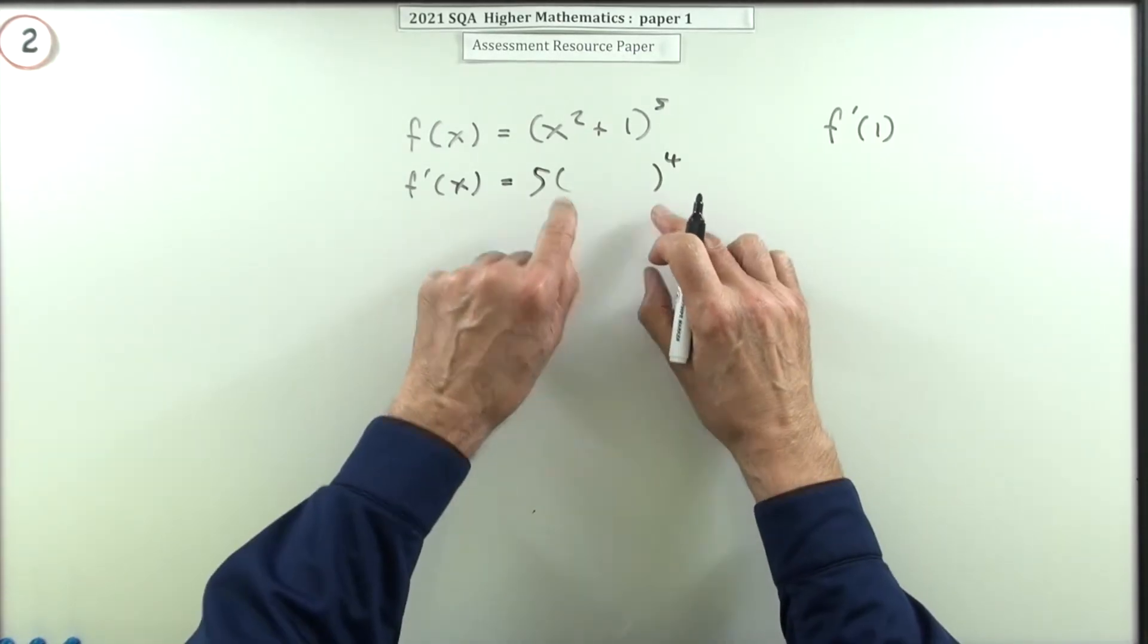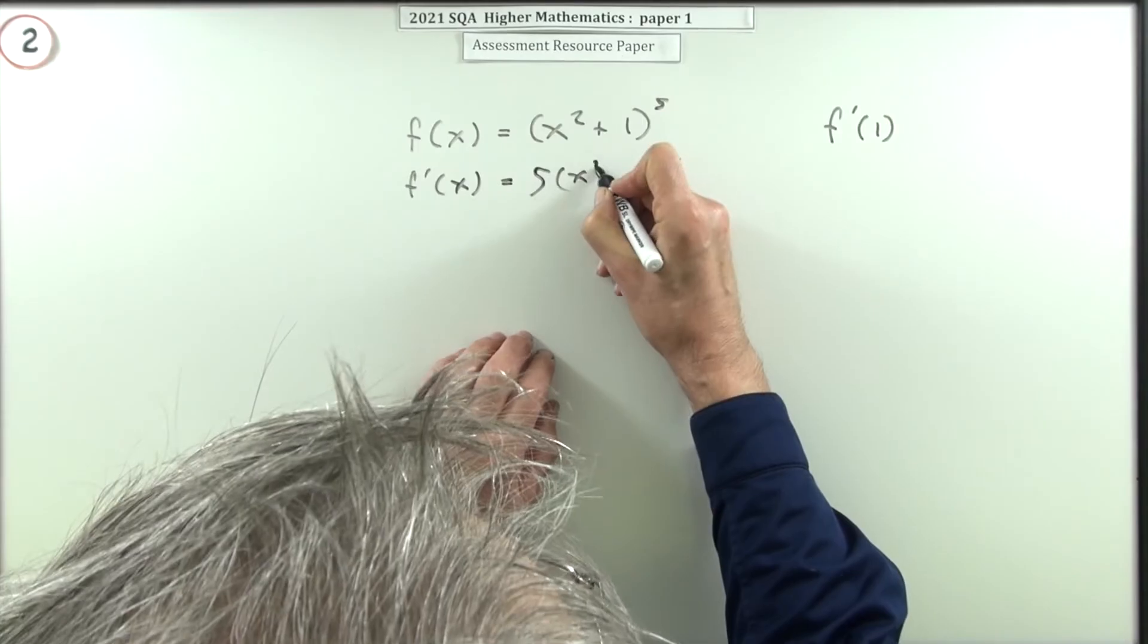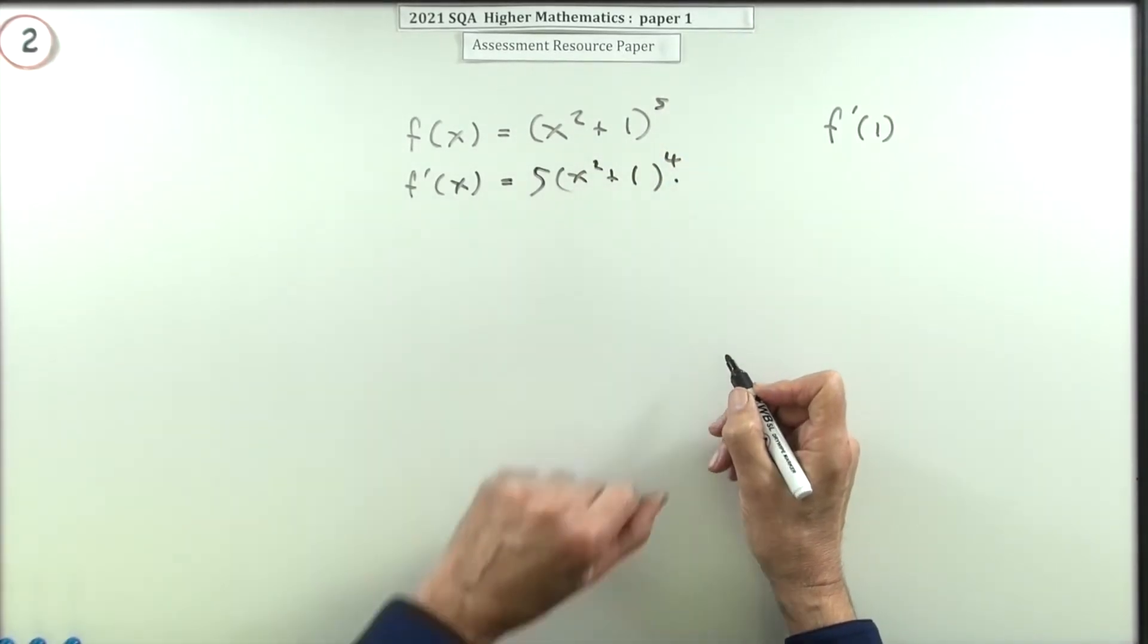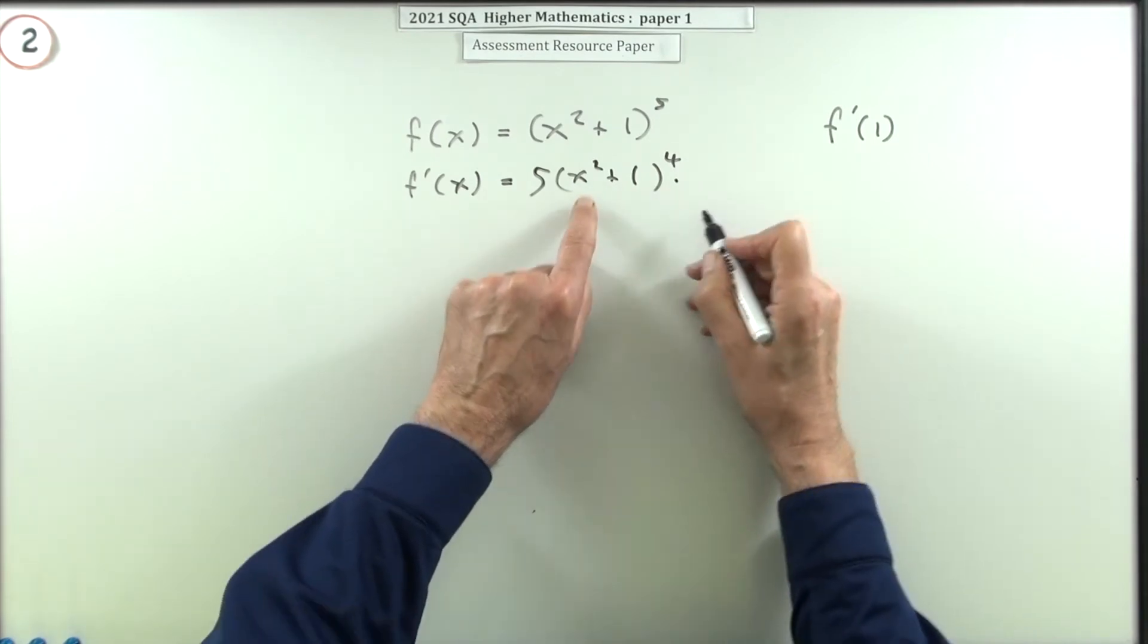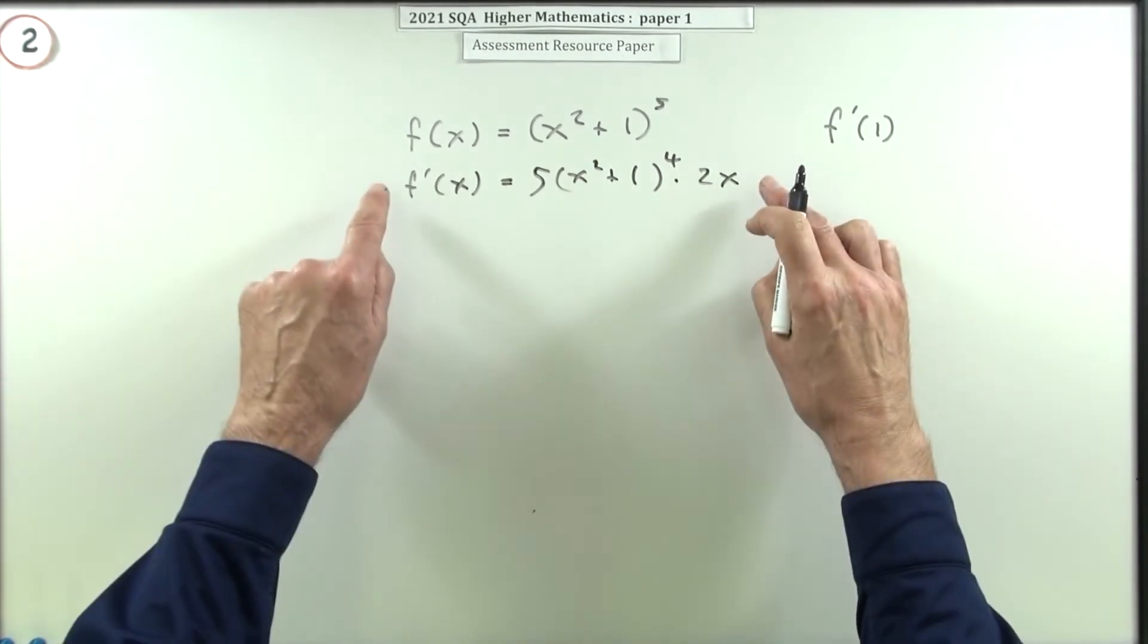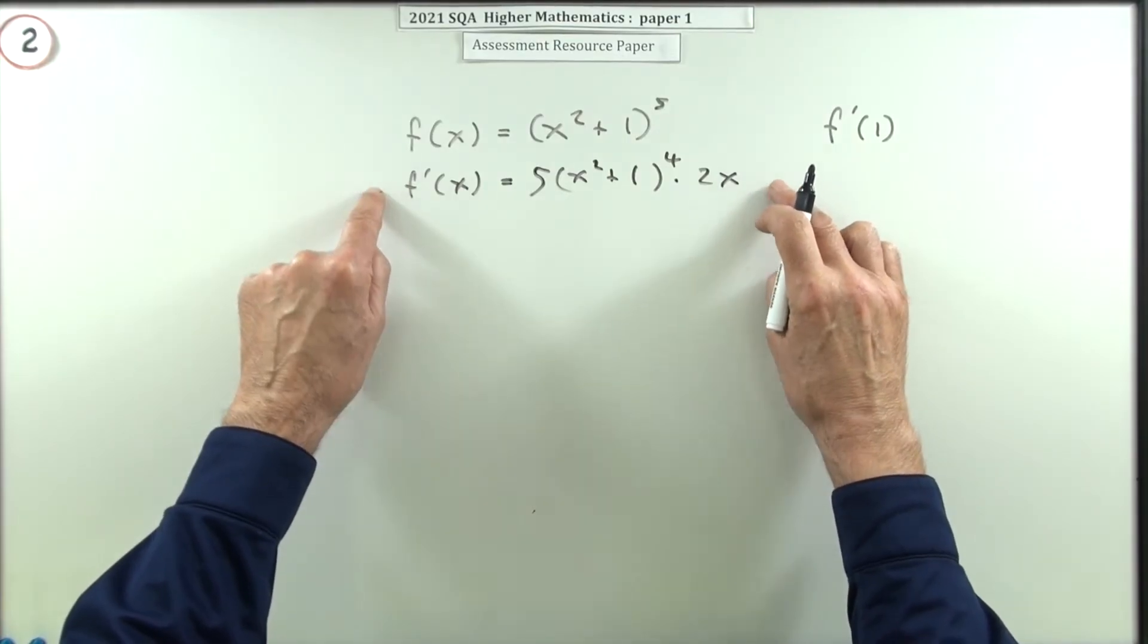Now what was the bracket? It was x squared plus one. How fast does that change? What's its derivative? Well that's two times x, two times the value of x. Now that would be the first two marks.